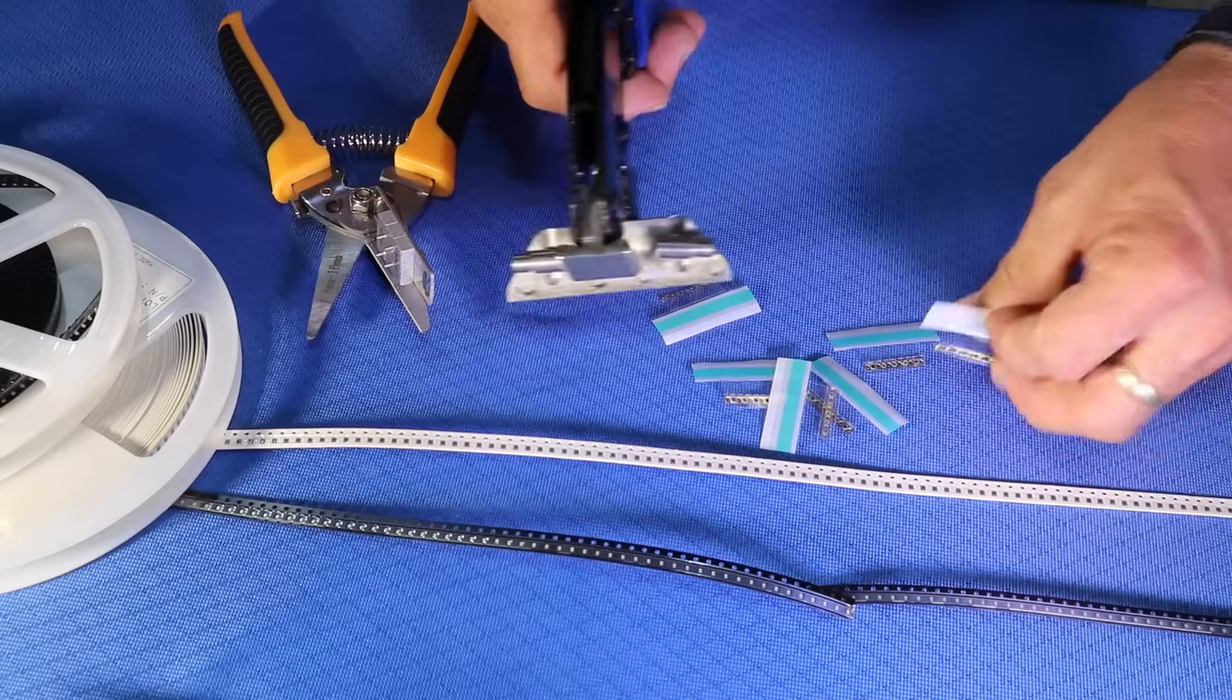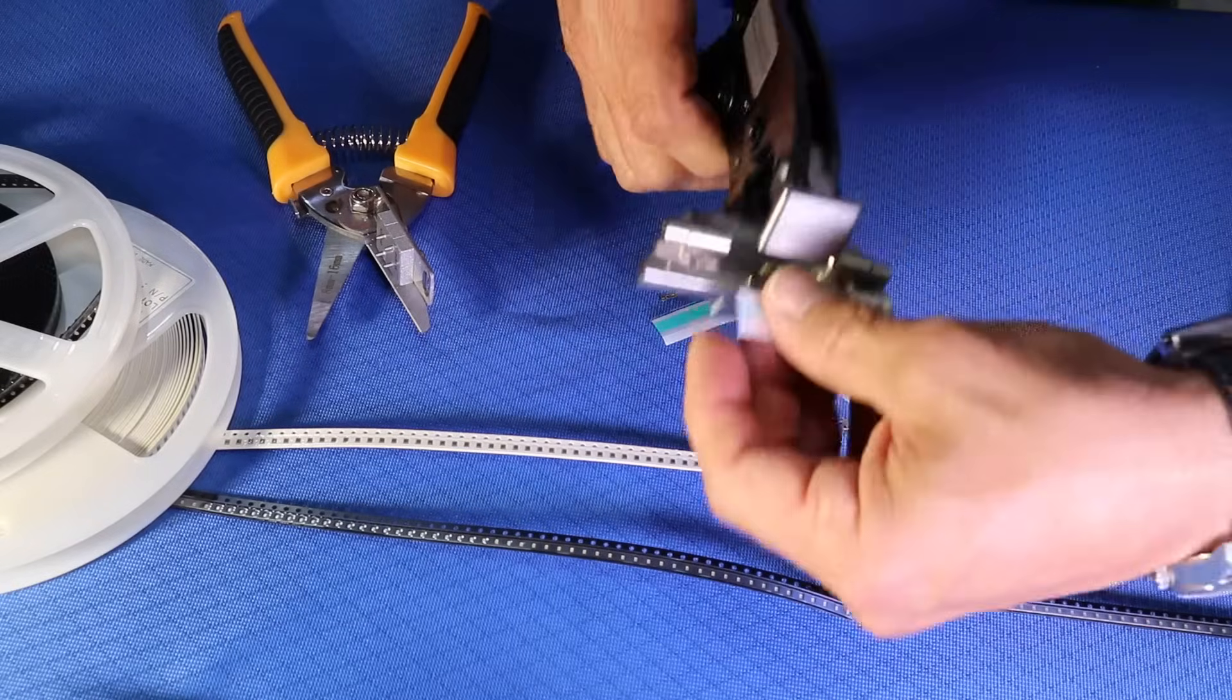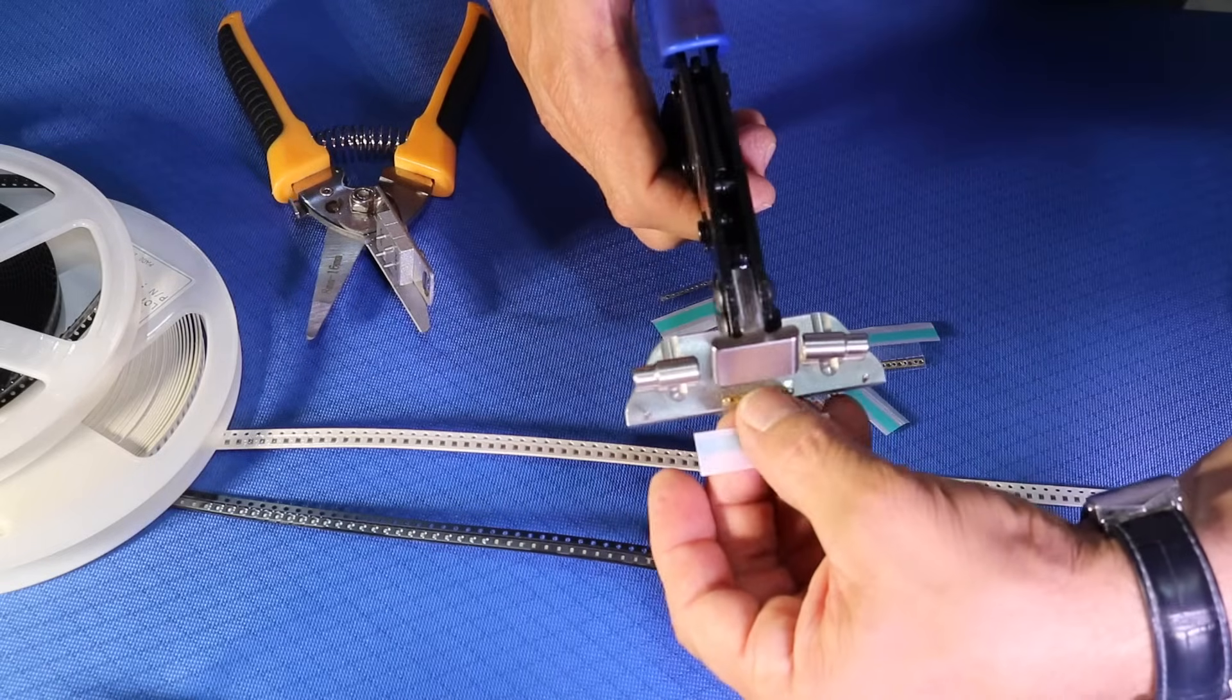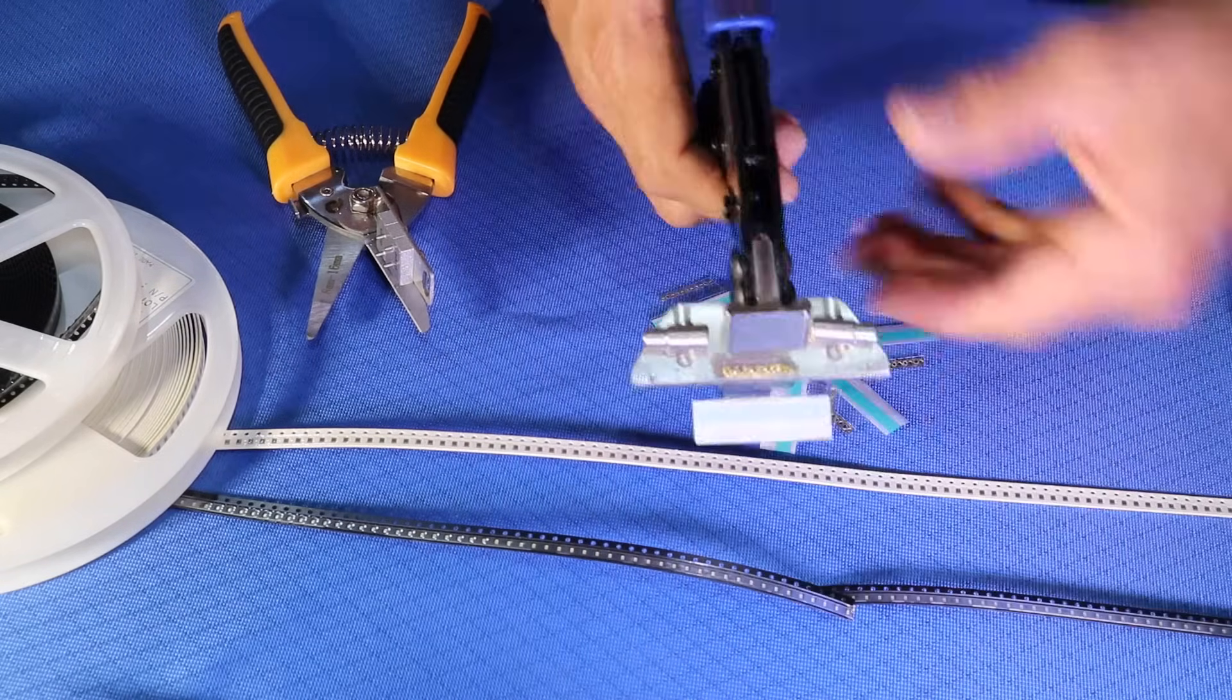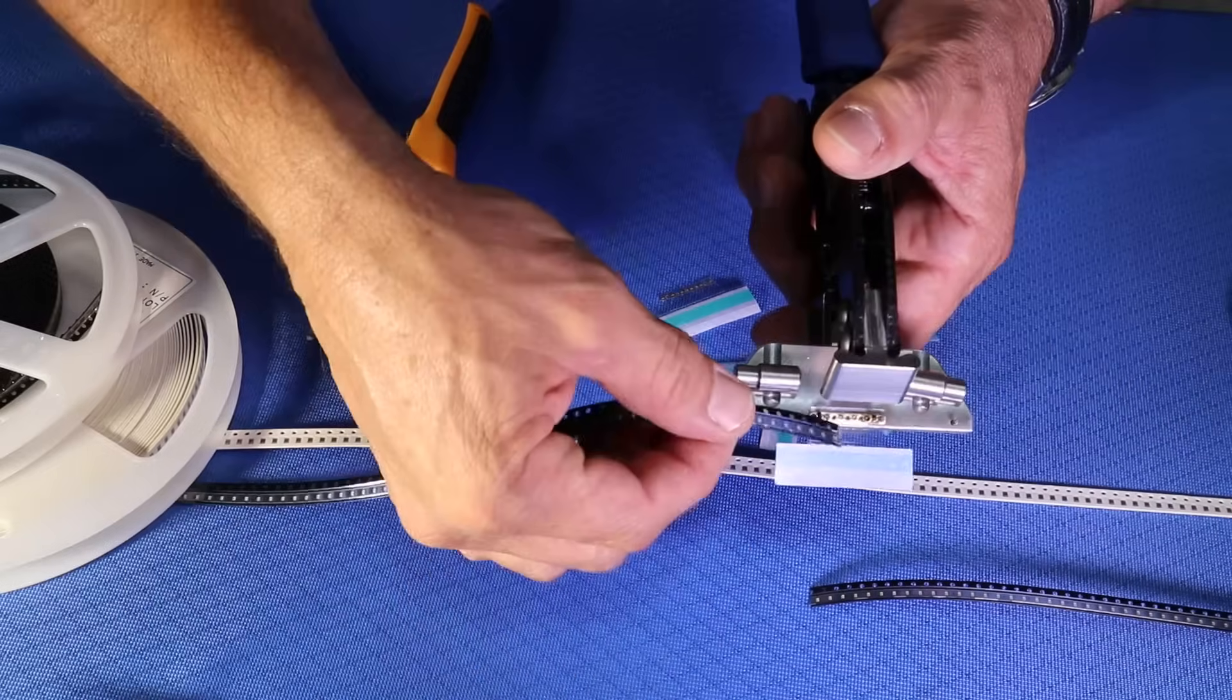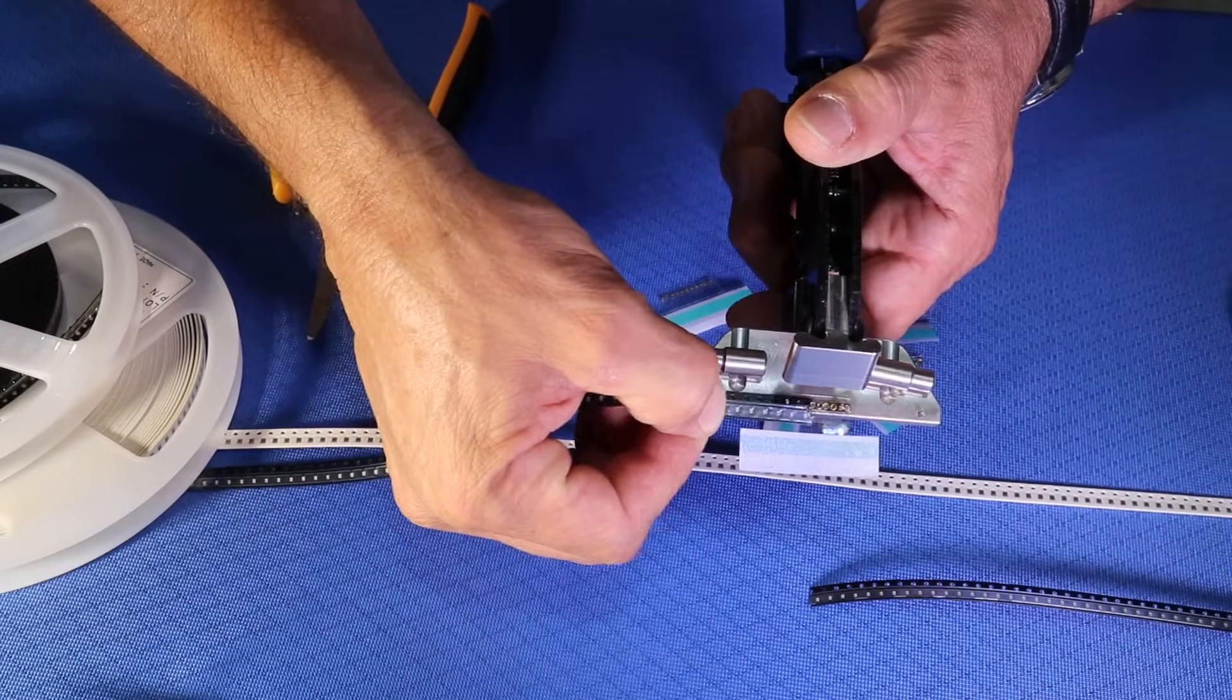Then we'll load the splicing tool with the splice tape with Shimin 1 centered on the alignment pins, and place the pieces of carrier tape that we're going to be splicing into the tool.